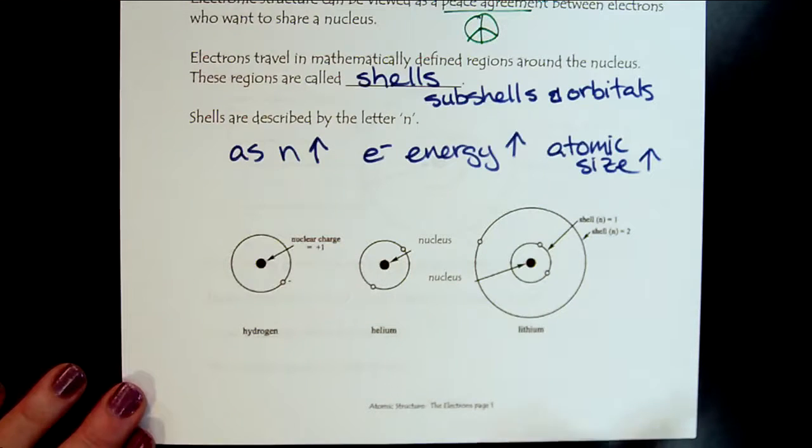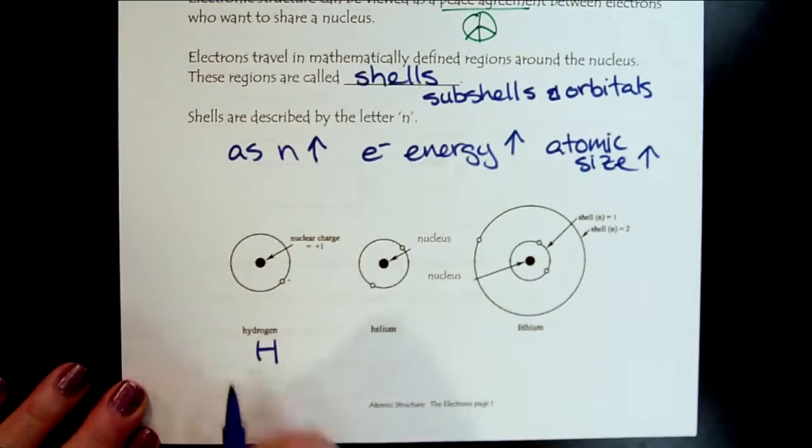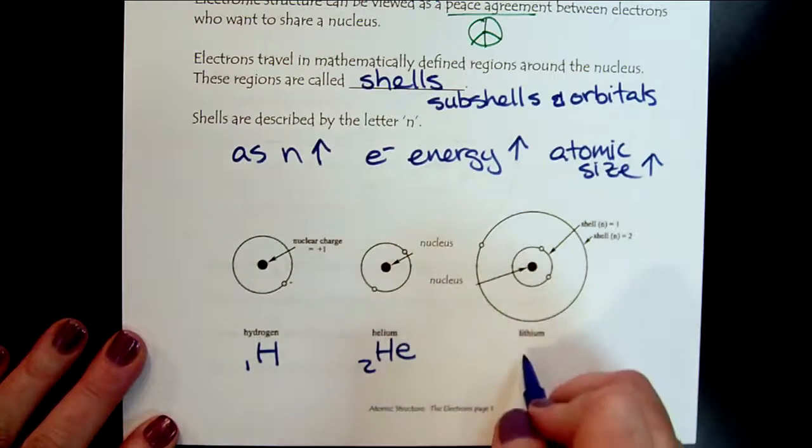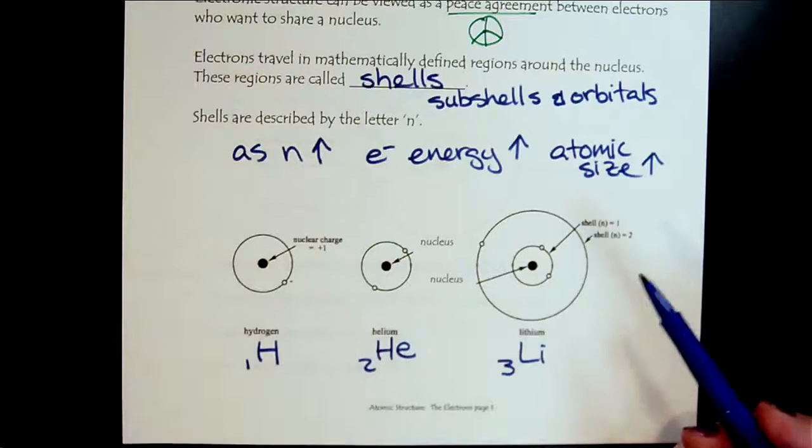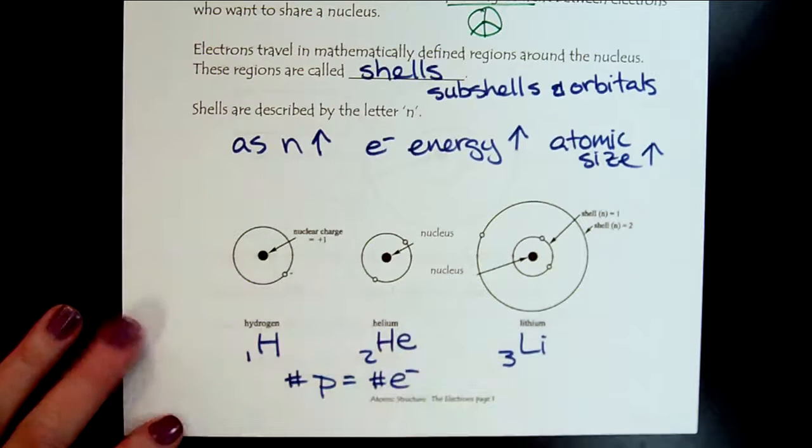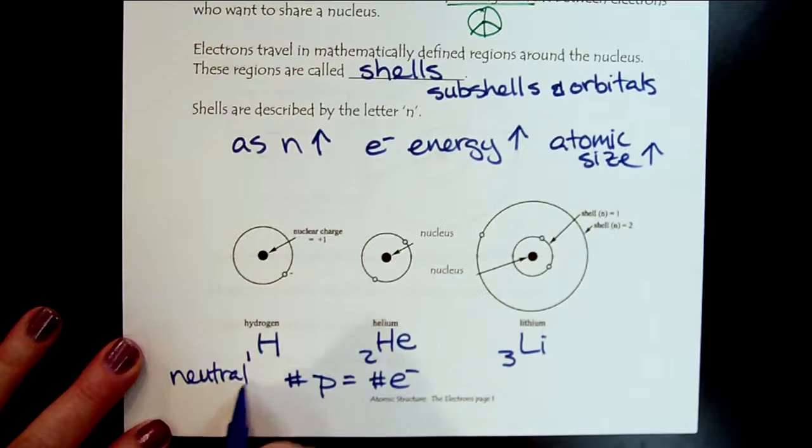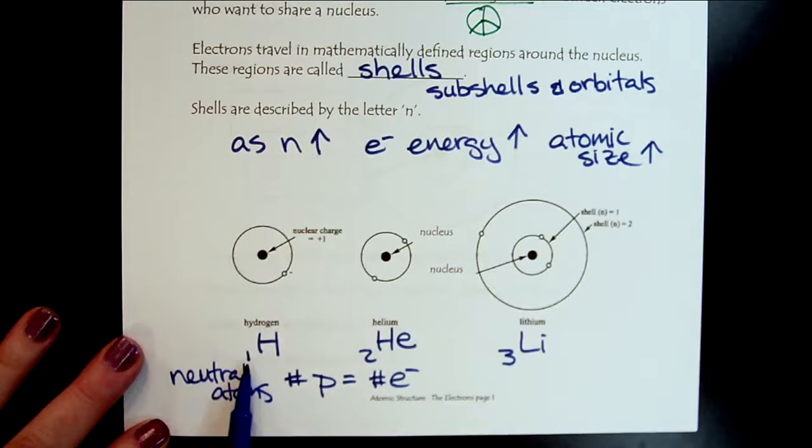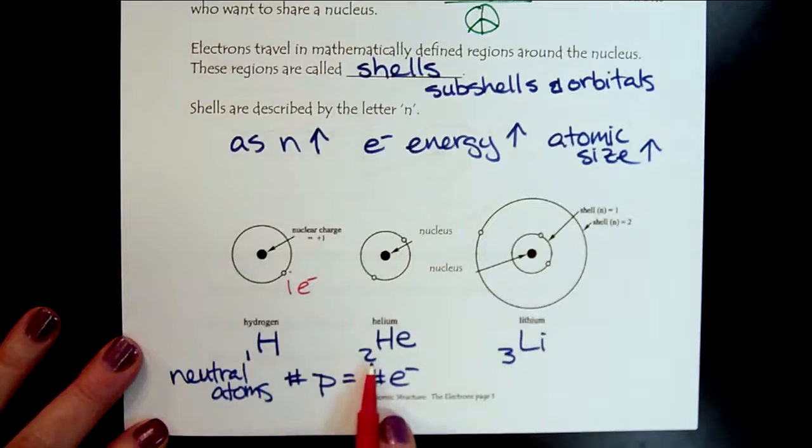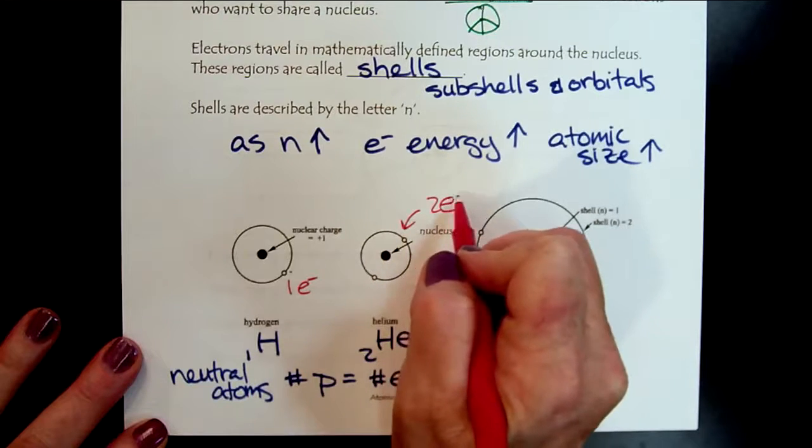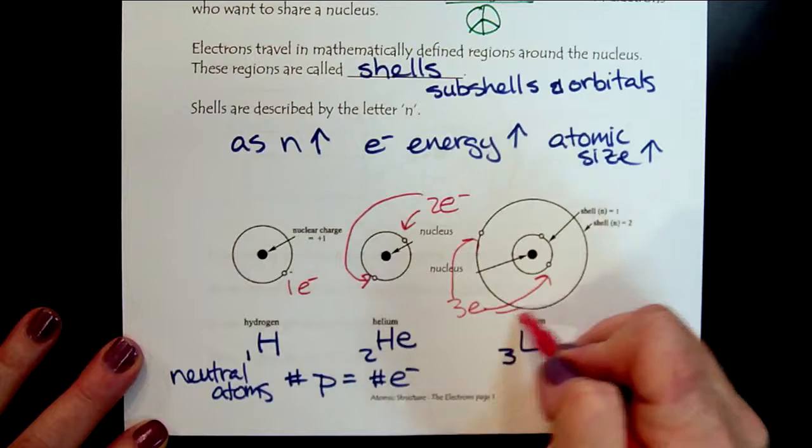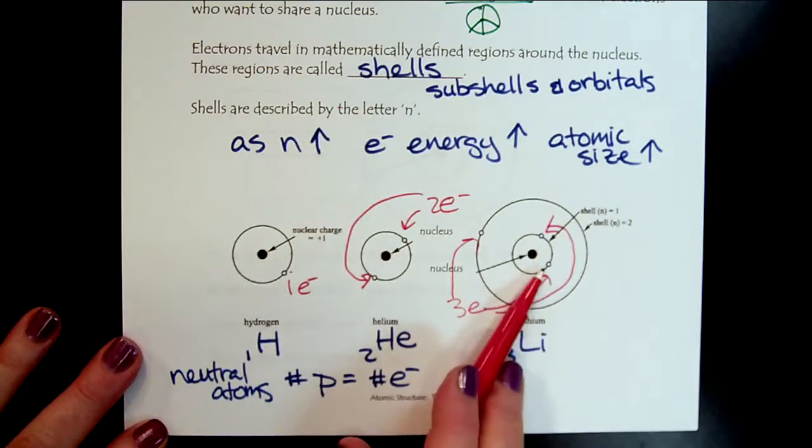So let's look at three atoms. So here's our buddy hydrogen. And we know it has one proton. There's the nuclear charge. Here's our buddy helium, two protons. And then lithium with three protons. And because the atoms are neutral, we know that the number of protons is going to equal the number of electrons, because these are neutral atoms. So since hydrogen has one proton, there's its one electron floating around, right there. And then helium would have the two electrons.